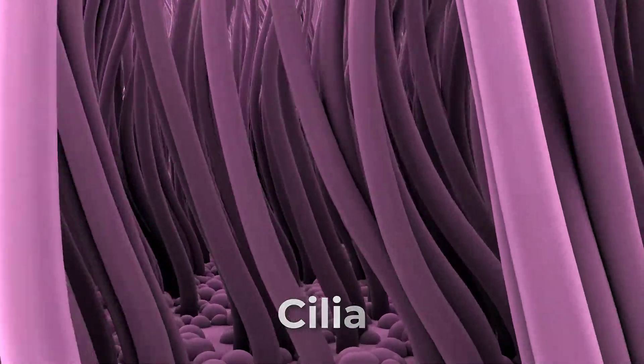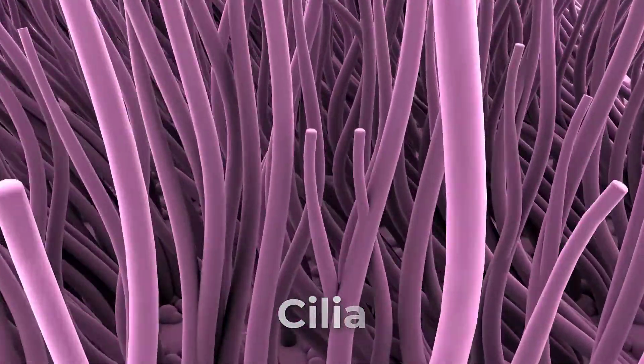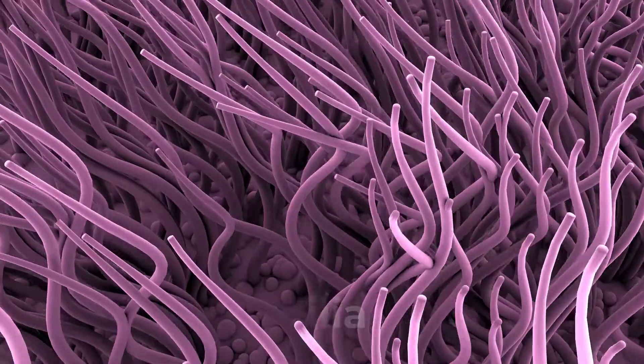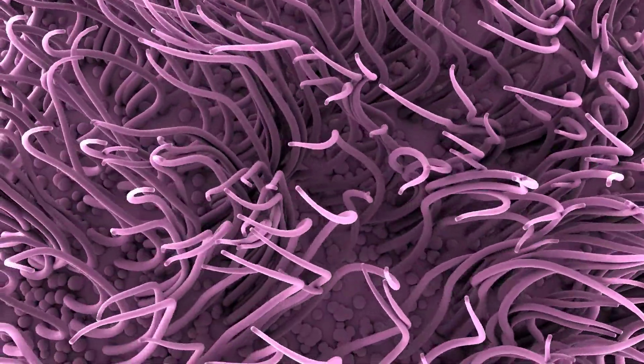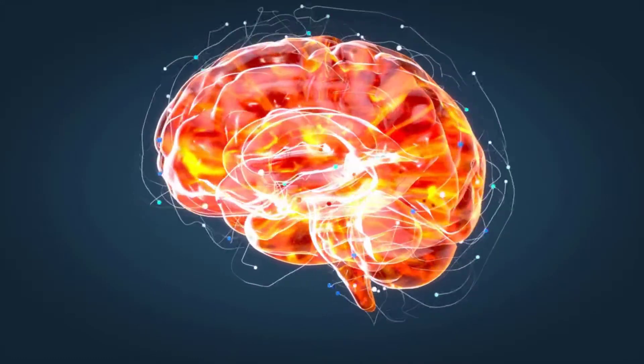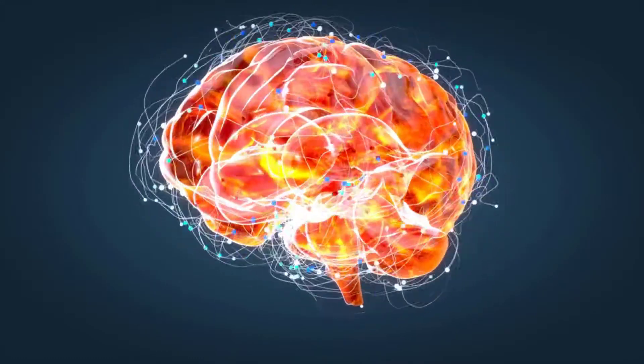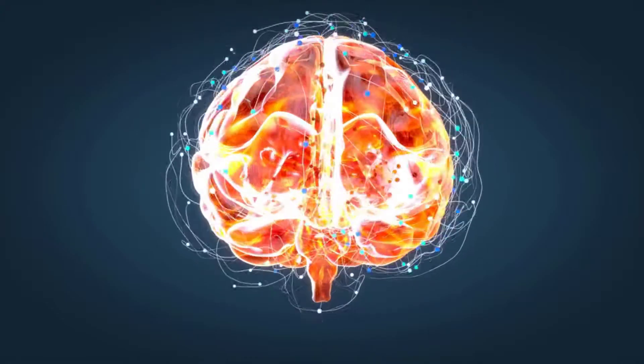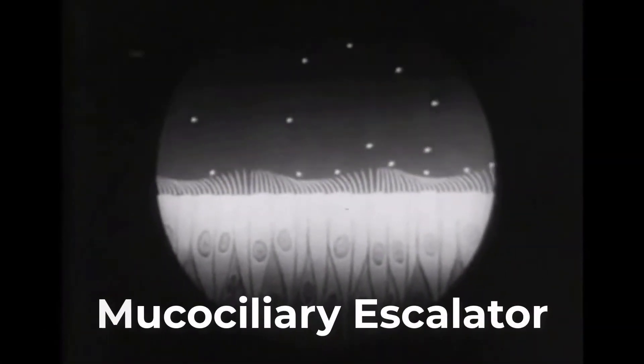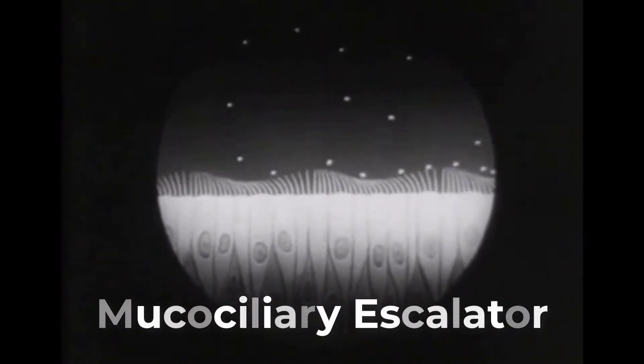Cilia are microscopic extensions of the apical cell membrane that are supported by microtubules. They beat in unison and move fluids as well as trapped particles. Ciliated epithelium lines the ventricles of the brain where it helps circulate the cerebrospinal fluid. The ciliated epithelium of your airways forms a mucociliary escalator that sweeps particles of dust and pathogens trapped in the secreted mucus towards the throat. It is called an escalator because it continuously pushes mucus with trapped particles upward.